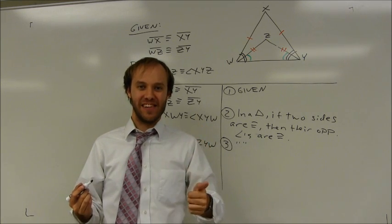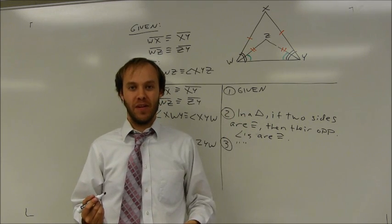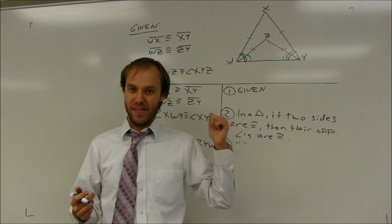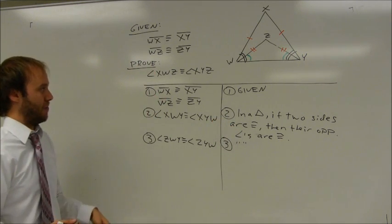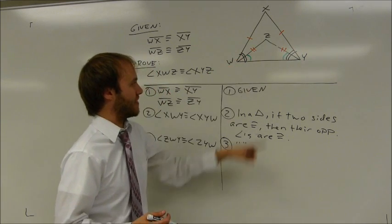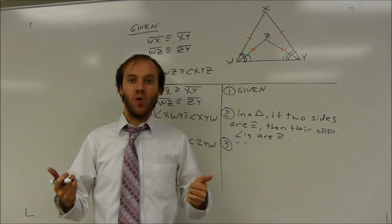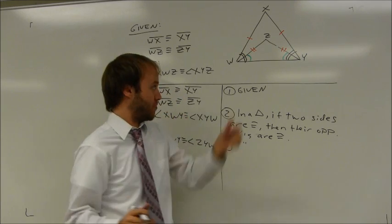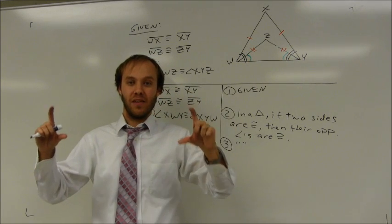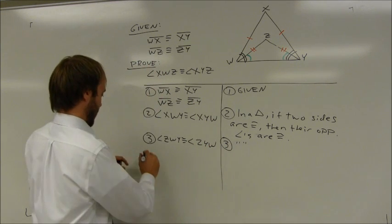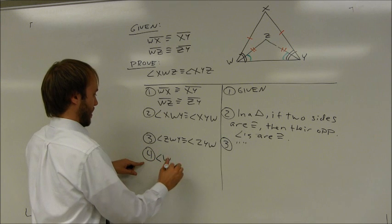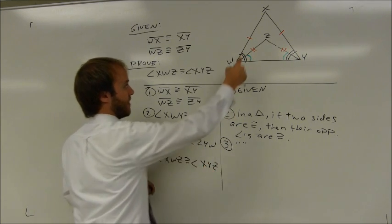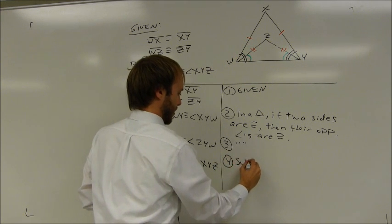I don't need to use the term isosceles triangle in this proof. I can add that statement in and then state that base angles of isosceles triangles are congruent — this allows us to get around that additional step. You can see that the whole angles are congruent on both sides and the lower angles are congruent on both sides. What do I do with those whole angles to get the remaining upper angles? I subtract those lower angles. Subtracting congruent lower angles from those whole angles gives me two new congruent upper angles — that's the subtraction property. So angle XWZ is congruent to angle XYZ by the subtraction property.